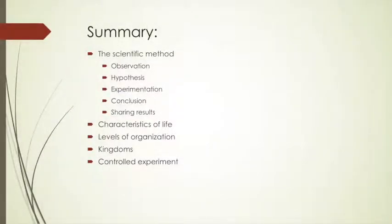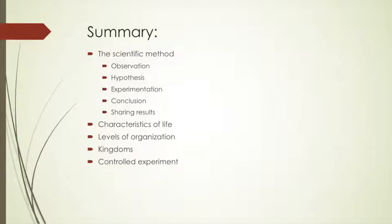In summary for this lecture: we discussed what the scientific method is, including observations, hypothesis, experimentation, conclusion, and sharing results. We discussed the characteristics of living things, the levels of organization from the atom all the way up to the biosphere, and the five kingdoms of living things. And we saw an example of a controlled experiment.